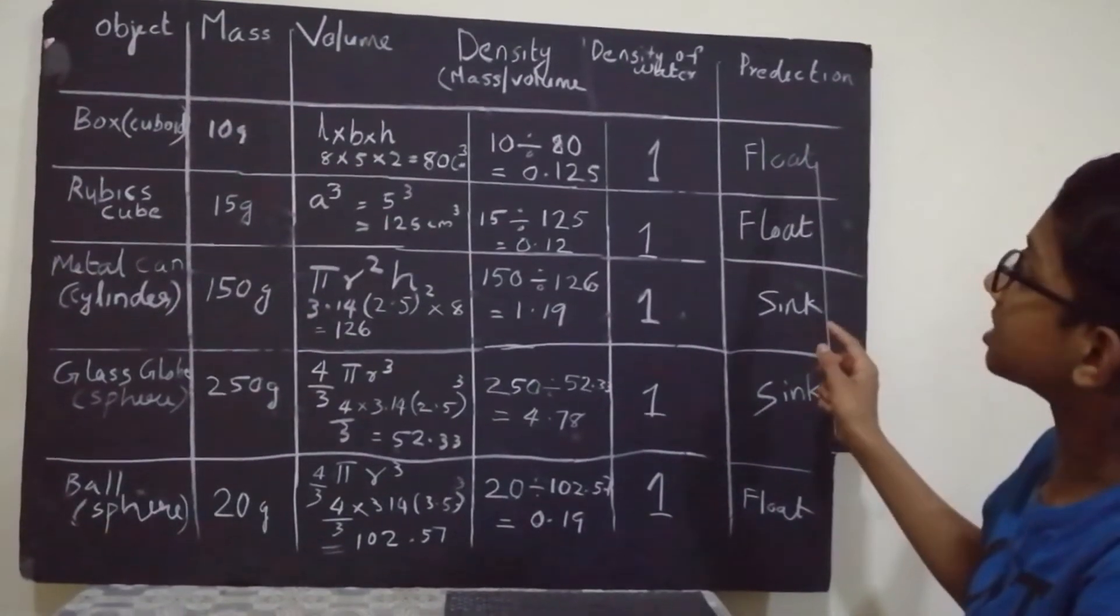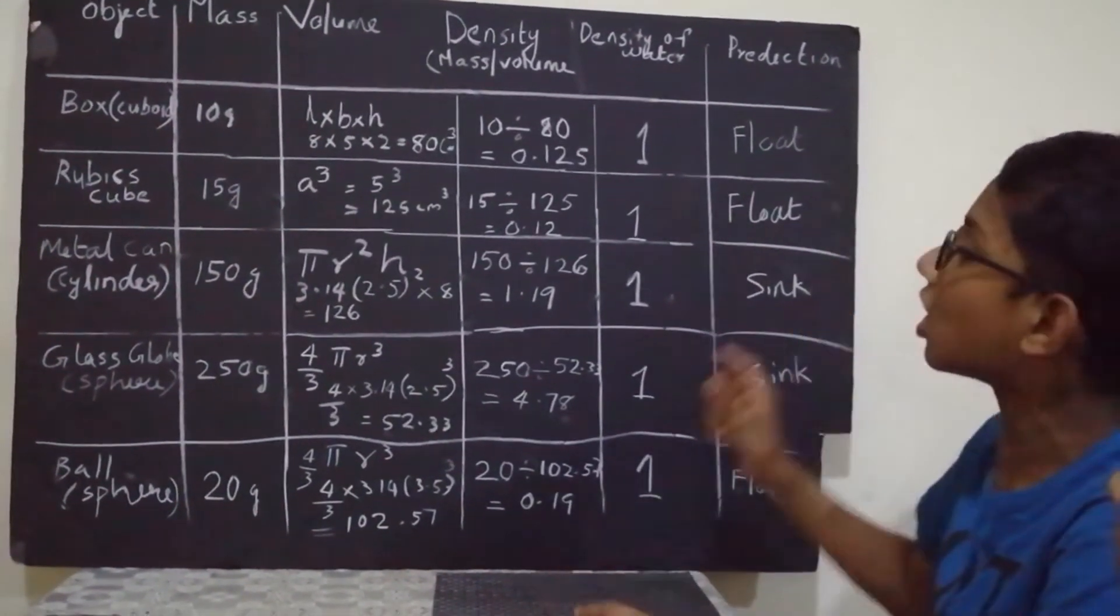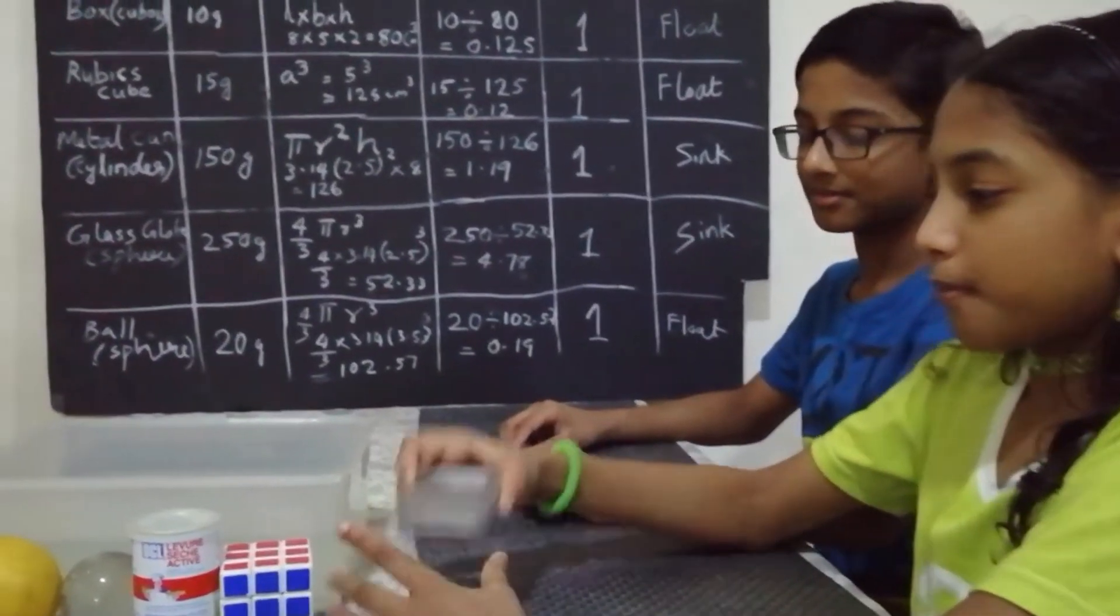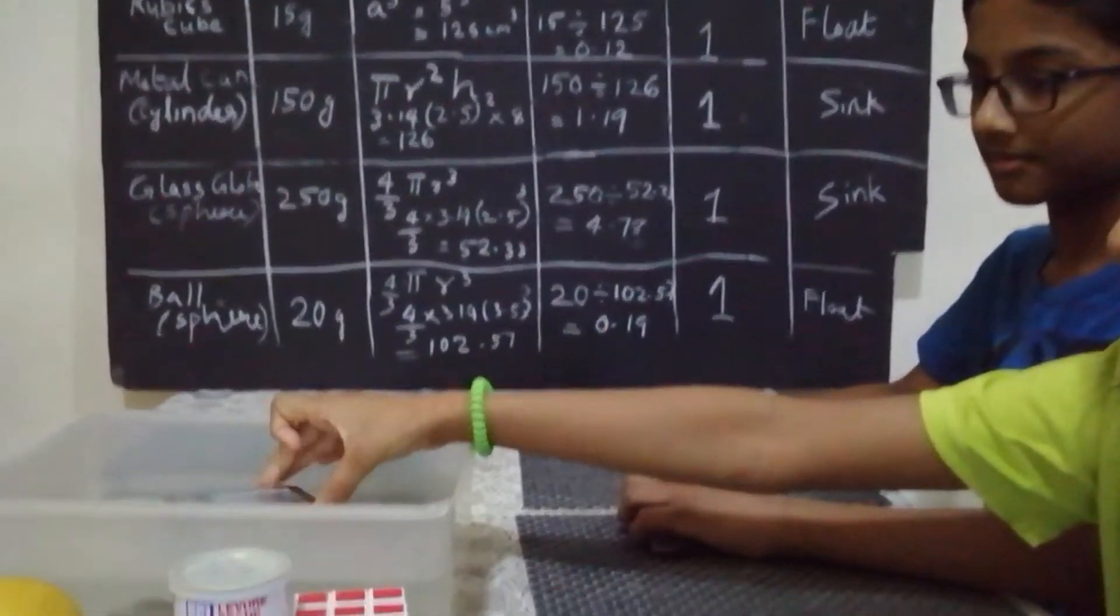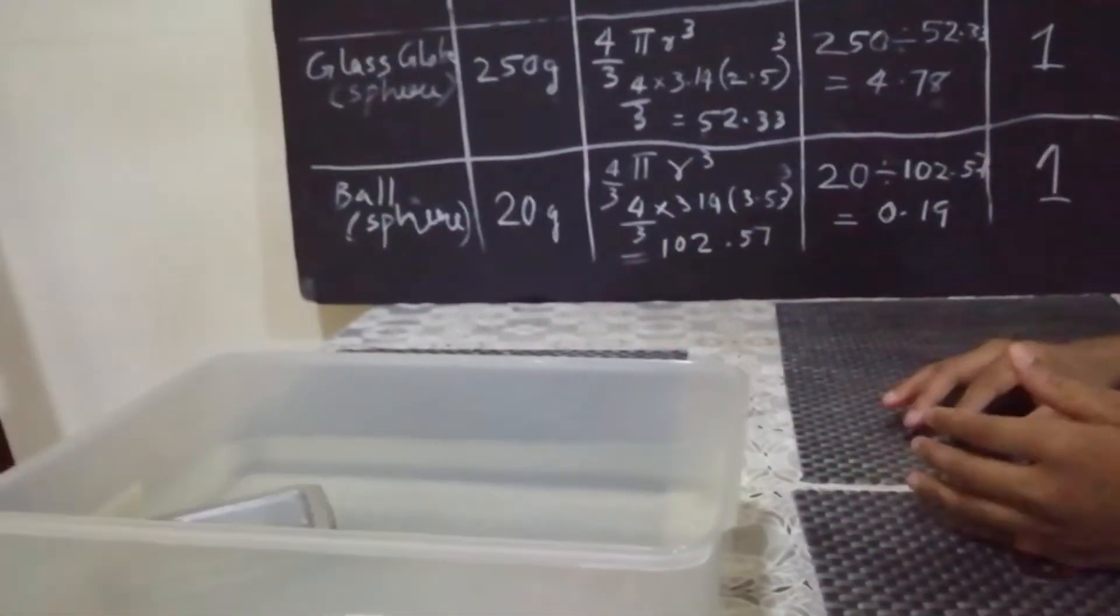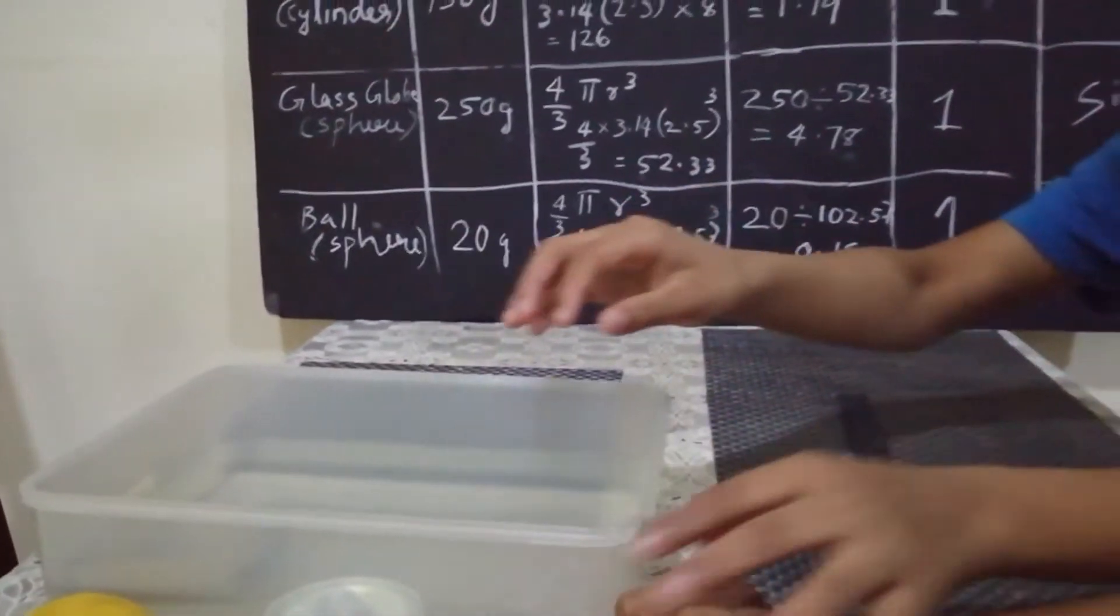So now, let us check our prediction is true or not. Let us check. Box. Yes, it is floating. So our prediction was true.